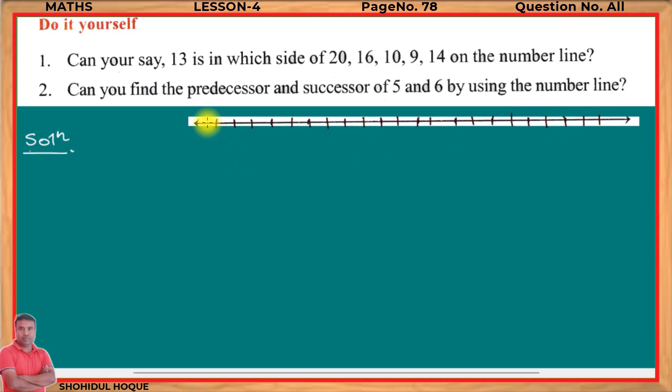Drawing the number line: 1, 2, 3, 4, 5, 6, 7, 8, 9, 10, 11, 12, 13, 14, 15, 16, 17, 18, 19, 20, 21, 22.